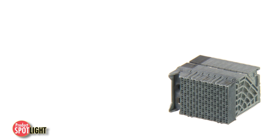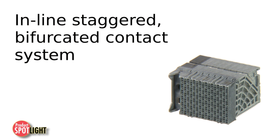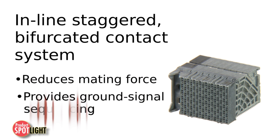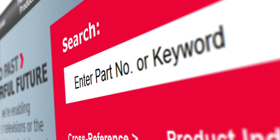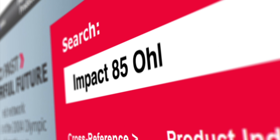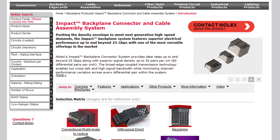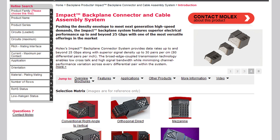Two compliant pin dimension options allow you to balance your electrical and mechanical application requirements. The Impact daughter card mating interface utilizes inline staggered bifurcated contacts that reduce the mating force per pin and provide ground signal sequencing without the need for multiple backplane signal pin heights. For more information, visit molex.com and search for Impact 85 ohm.